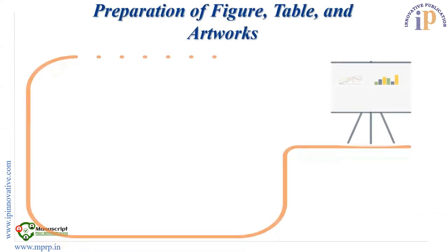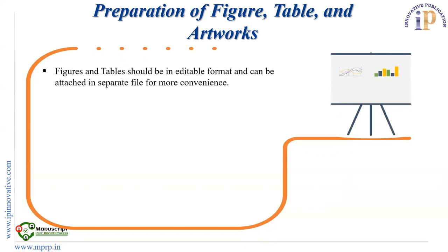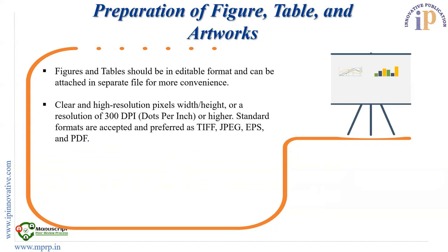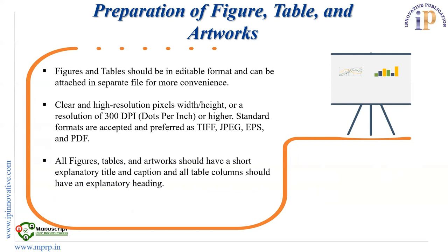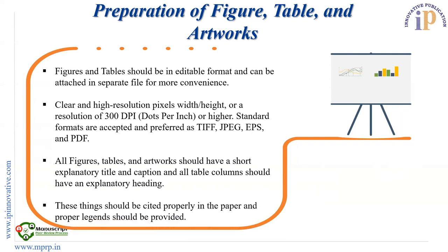The preparation of figures, tables, and artwork is very important while preparing a paper. Figures and tables should always be given in an editable format, which makes it easy for copy editors or proofreaders to set the paper in proper format. They can be attached in a separate file for more convenience. Clear and high-resolution images are very important — the resolution should be 300 DPI (dots per inch). Standard formats accepted include JPG, PDF, or EPS. All figures, tables, and artworks should have a short explanatory title and caption, all table columns should have explanatory headings, and proper legends should be provided with each table and figure.